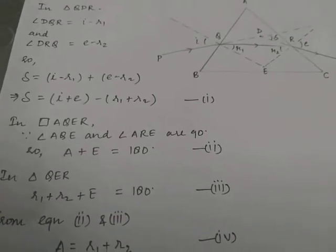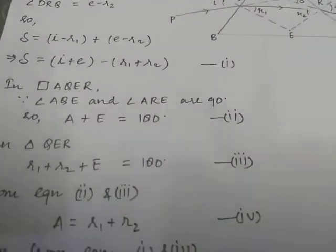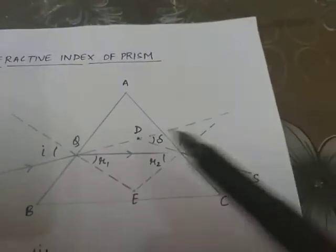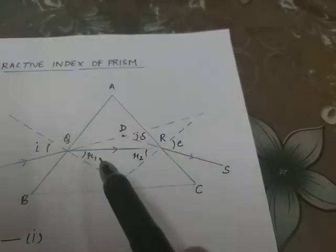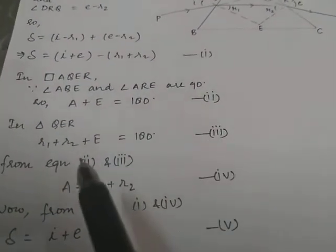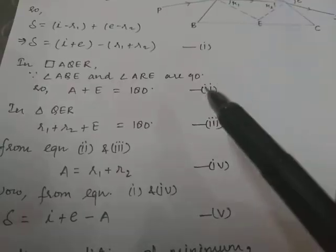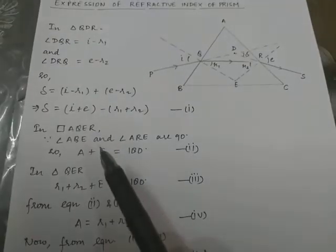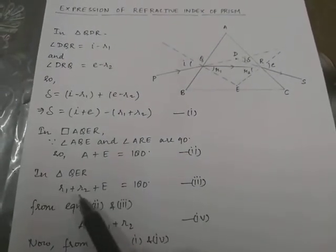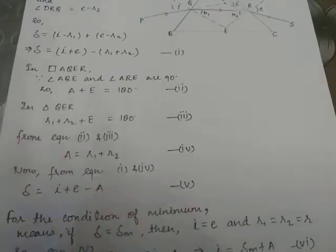In triangle QER, the sum of the three angles means r1 plus r2 plus E equals 180 degrees. This is equation number three. From equations two and three, since E and 180 are common to both, we can conclude that r1 plus r2 equals A. So A equals r1 plus r2. This is equation number four.